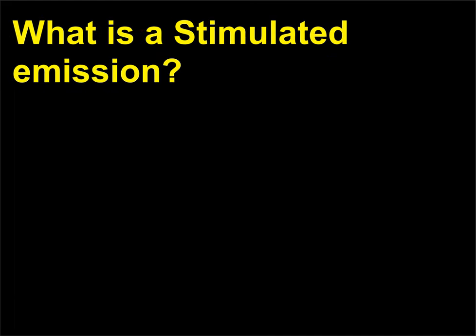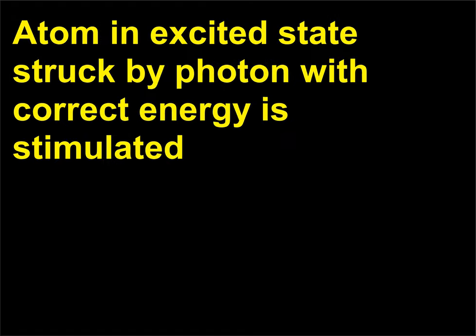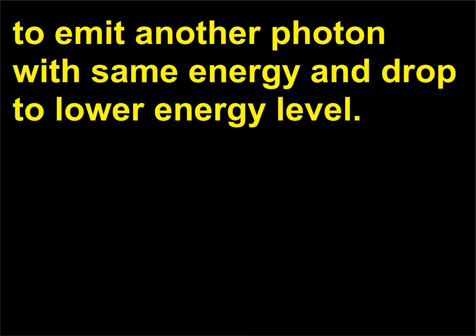What is stimulated emission? Stimulated emission occurs when an atom in an excited state is struck by a photon with the correct energy and is stimulated to emit another photon with the same energy, dropping to a lower energy level.